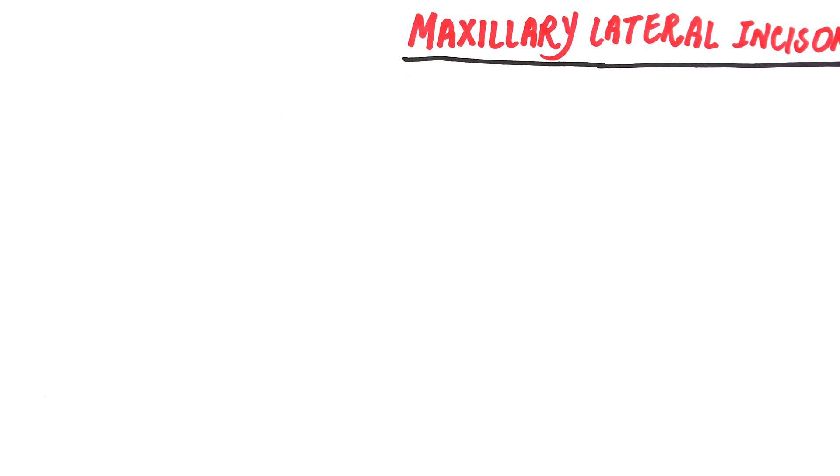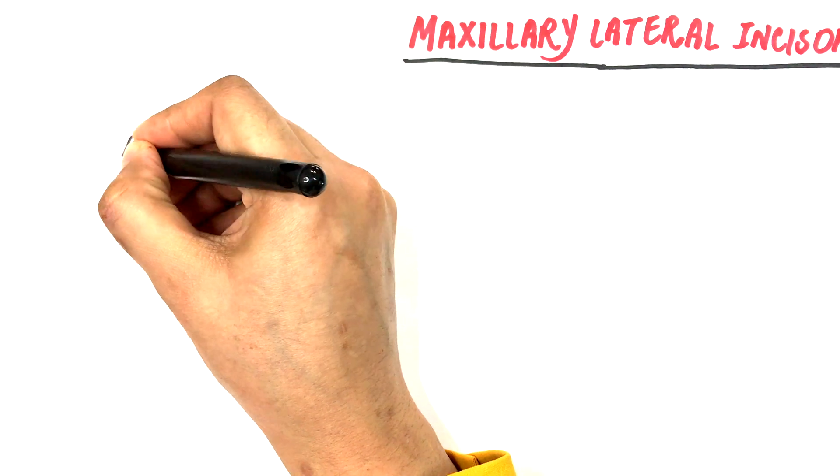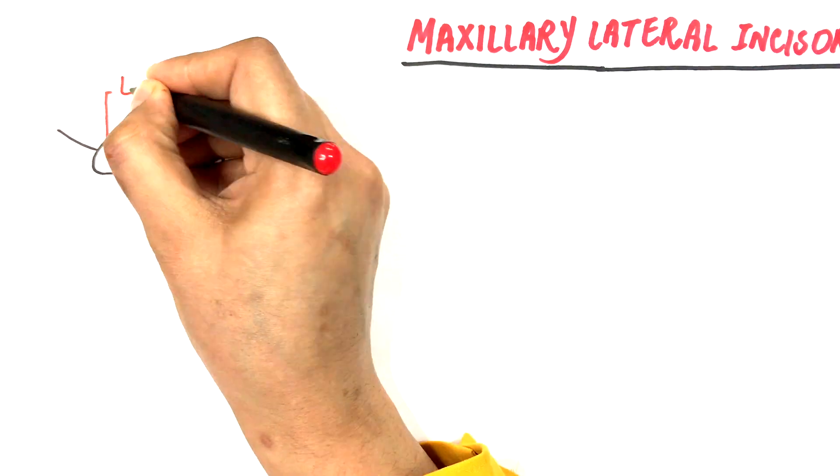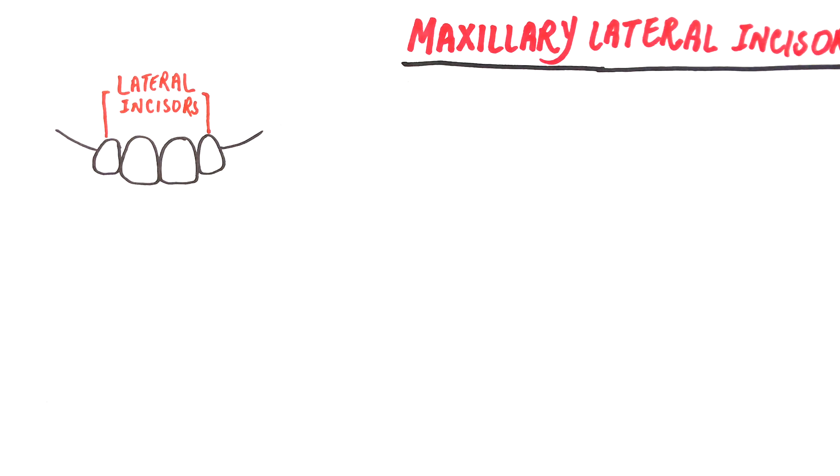The maxillary lateral incisor is the second tooth from the midline in each quadrant of the upper arch. We have two lateral incisors in the upper arch and two in the lower arch. The focus of today's video will be the maxillary lateral incisor.